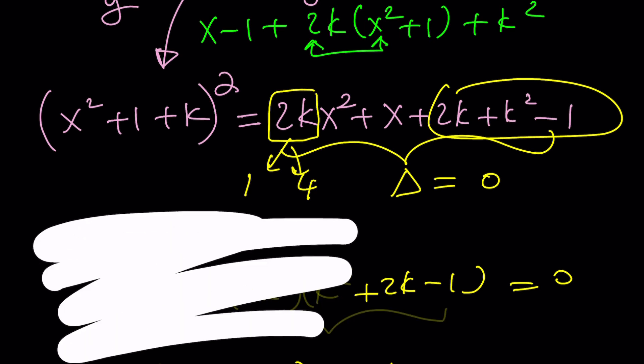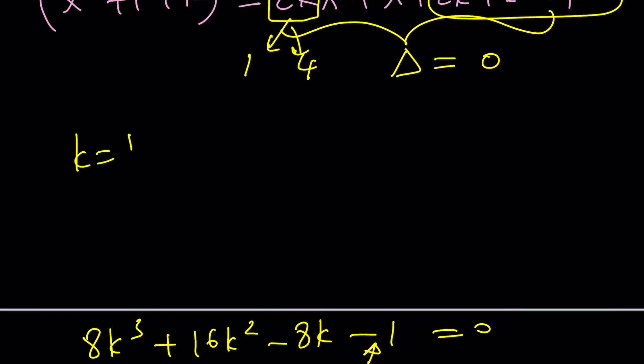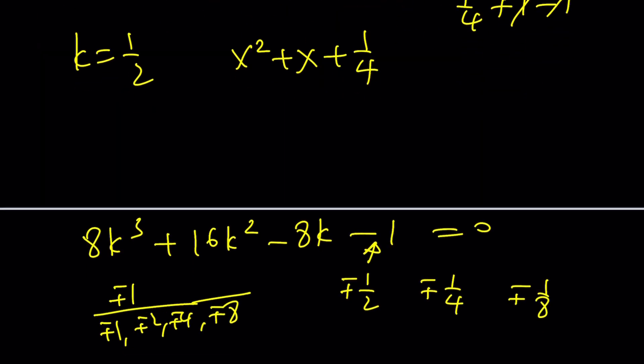If k is equal to 1 half, what happens? If k is 1 half, we get x squared and then plus x. And then here, 1 fourth plus 1 half times 2 is 1 minus 1. This is 1 fourth. Perfect. That is just a perfect square. Isn't that amazing? Yes, I know what you're thinking. That doesn't look like 1, but it is.